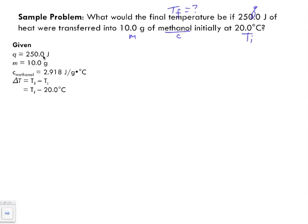And so what we have here: our q, 250 joules; mass, 10 grams; our specific heat capacity of methanol, 2.918 joules per gram degree Celsius. Again, like I said, this is our given.